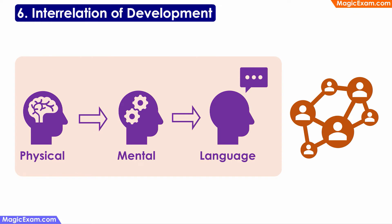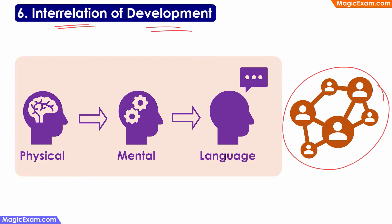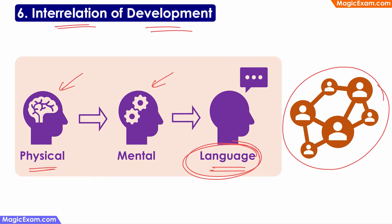Next is the principle of interrelation of development, which says that various types of development are interrelated. For example, in language development, the physical development of the child has to happen first because the brain has to develop. Only then will the cognitive abilities of the child develop, and only when the child is cognitively ready will language development happen. And for social development, language development has to happen first for the child to interact socially with others. When the child starts interacting socially, language will also improve further. And when language develops, the child can absorb more information, so mental development happens too. Therefore, all these different types of development are interrelated — that is the principle of interrelation of development.